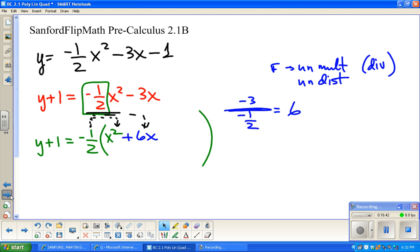This is good. Now I'm at a spot where I can complete the square. So half of 6 is 3, squared is 9. But when I add this over here, I have to balance things out. So I need to add a negative half of 9. Half of 9 is 4.5, so negative 4.5, or if you'd prefer, you can write negative 9 over 2.